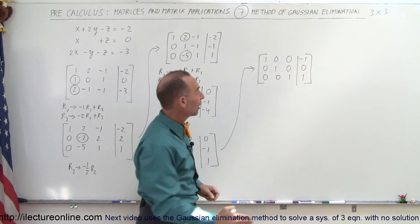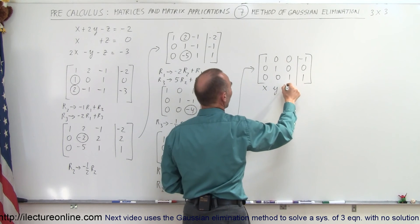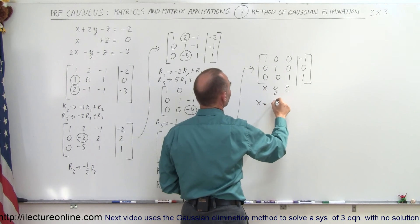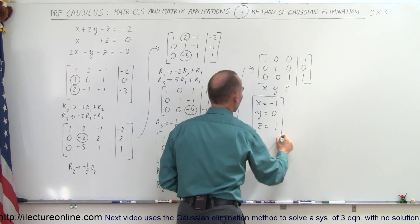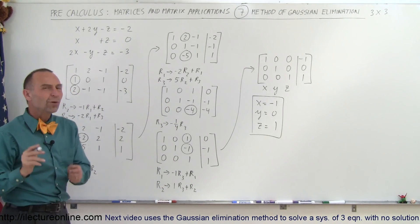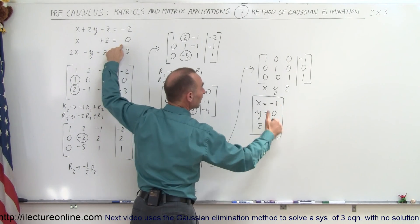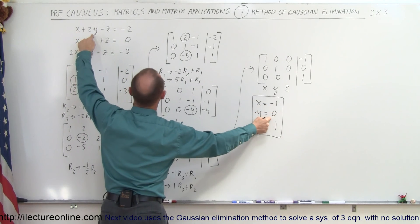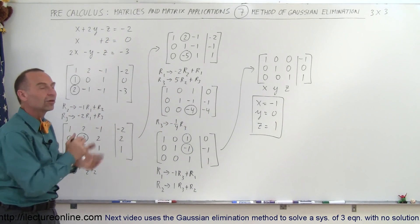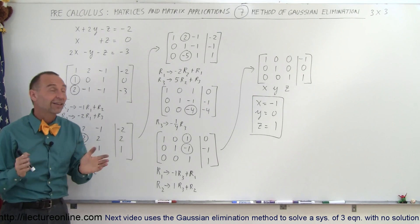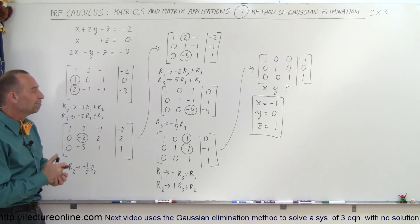Now we are done, because we have 1s across the diagonal and 0s everywhere else. The first column represents x, the second represents y, the third represents z, so x equals negative 1, y equals 0, and z equals positive 1 — the solution set for this system of linear equations. It's always good to do a quick check: x plus z equals negative 1 plus 1 equals 0, and negative 1 plus 0 minus 1 equals negative 2, which checks as well. That looks like the proper solution. And that's how we use the method of Gaussian elimination to solve a 3-equation, 3-unknown problem. It's a pretty slick method and it works quite well.